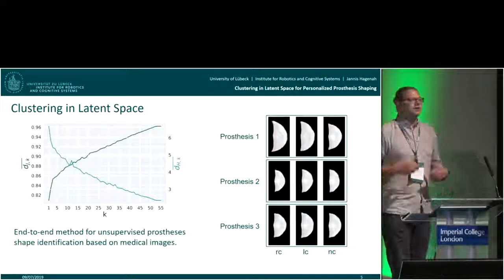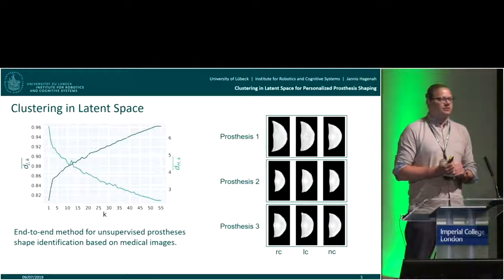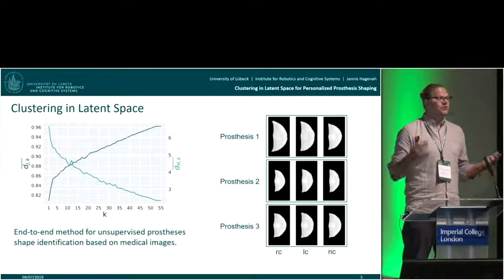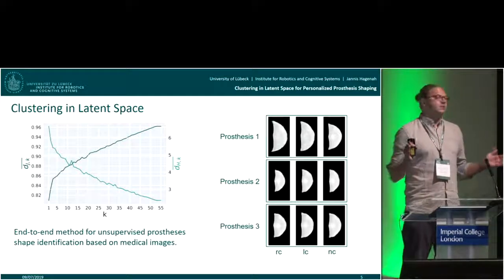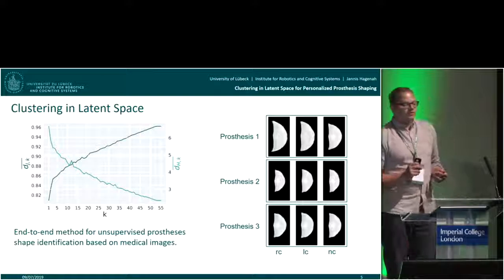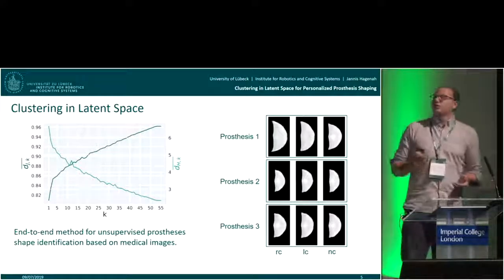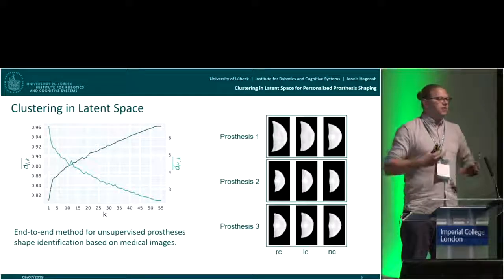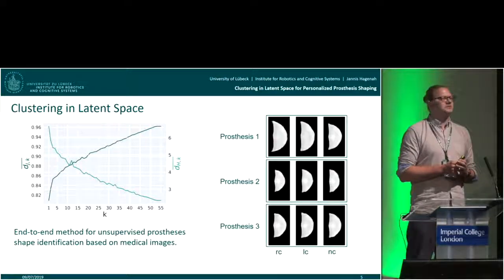We can discuss the results at the poster. The key thing is we can do analysis on how many classes we need — how many prosthesis types should be available. The main contribution is an end-to-end method for unsupervised prosthesis shape identification directly on images, and this is not only limited to aortic valve prostheses but to basically each kind of shape that we can image in the body. Thanks, and we'd be happy to see you at the poster.